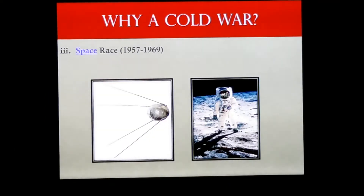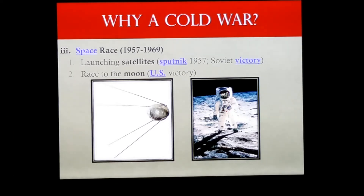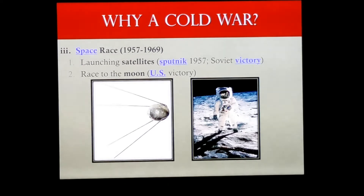Another major front was the space race. The Soviets launched the first satellite, Sputnik, in 1957 — a huge Soviet victory. They also put the first person into orbit, but we were the first to complete a full orbit of the Earth and eventually got to the Moon first after investing a lot more money. One big reason we wanted to get there first was fear that the Soviets might put a nuclear weapon on the Moon and use it like a weapon against us.